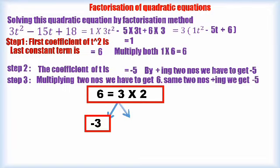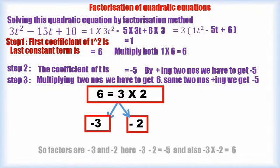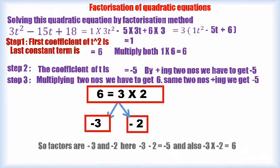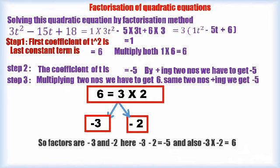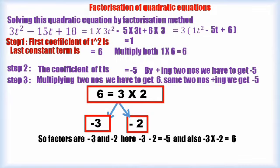That's why -3 is one factor. Another factor is -2. That's very nice. So factors are -3 and -2. Here, -3 - 2 = -5. At the same time, -3 × -2 = +6.